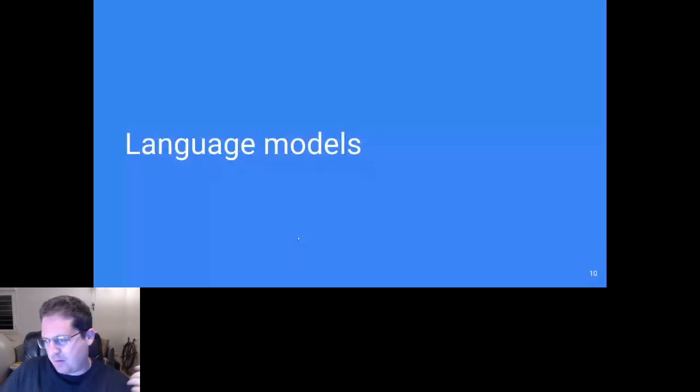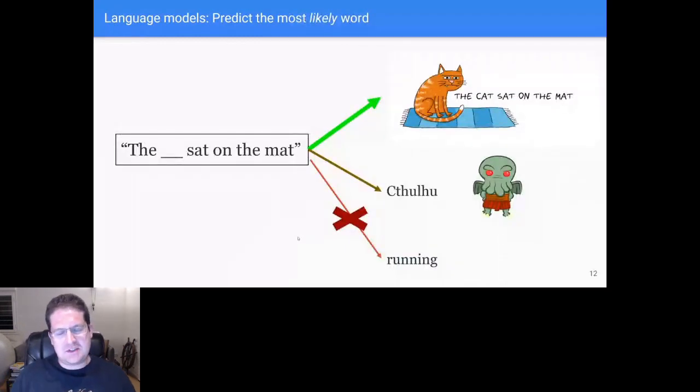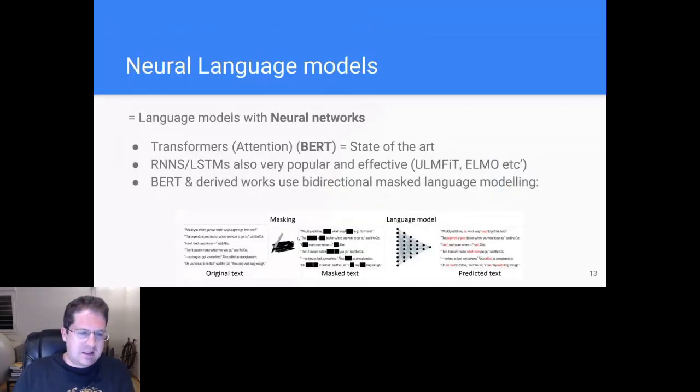So language models. This is a bit more from the field of NLP, natural language processing. The general idea is that you have a statistical machine learning model which tries to predict the missing word. So a good one would say the cat sat on the mat, the dog sat on the mat. Cthulhu sat on the mat is slightly less likely, but it's still much more likely than the running sat on the mat or more reality on Cthulhu sat. This is completely dominated these days by giant neural language models, deep learning, like a few other fields.